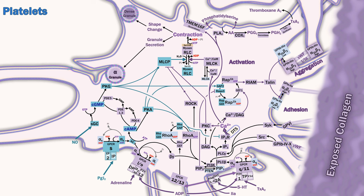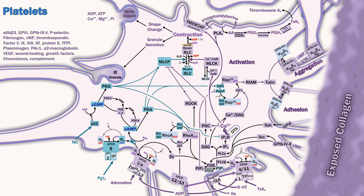Myosin contraction also leads to granule secretion. Dense granules contain procoagulant molecules, including a high concentration of calcium and ADP, which also participate in positive feedback stimulation, stabilizing platelet aggregates. Alpha granules contain a vast assortment of mostly procoagulant molecules, notably factor V and fibrinogen, as well as platelet membrane receptors, healing and growth factors, and some inflammatory mediators.